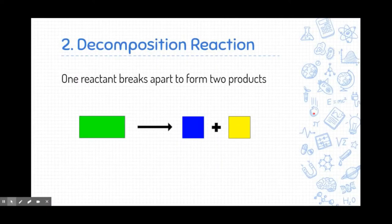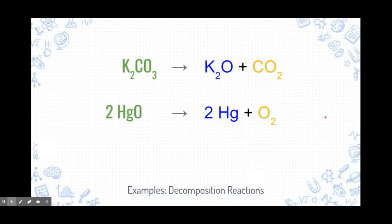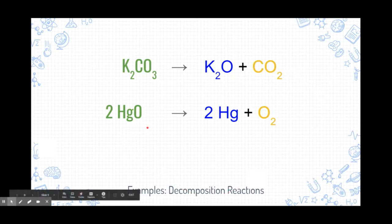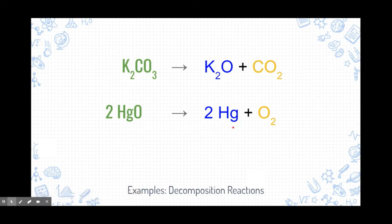The second type of reaction is called a decomposition reaction. It's just the opposite of a composition reaction — we start with one reactant, and that reactant breaks apart to form two products. Our first example is potassium carbonate, which breaks apart into potassium oxide and carbon dioxide. Again, we're not just splitting it down the middle — they rearrange themselves. The next example is mercury oxide, which breaks apart into mercury and oxygen.